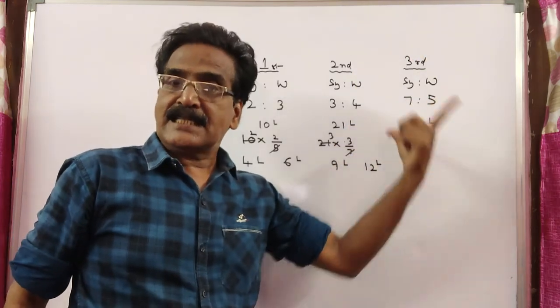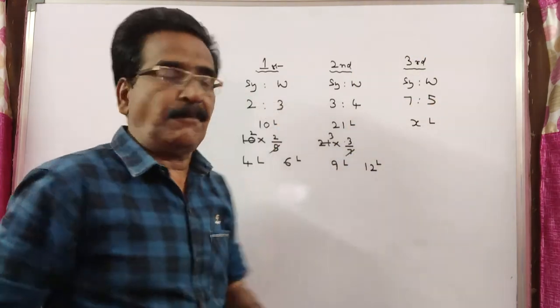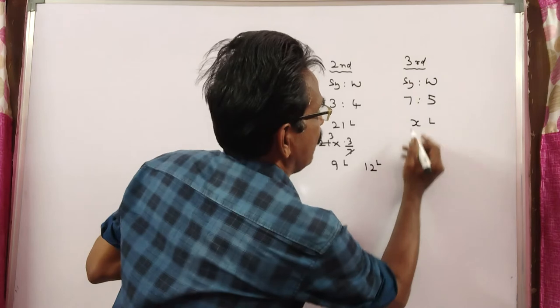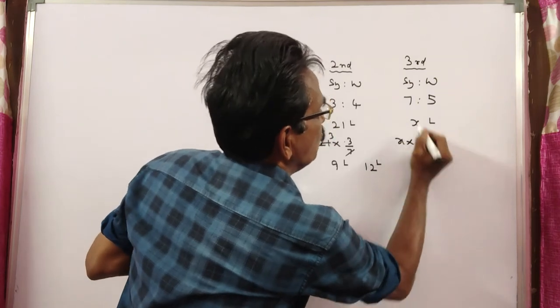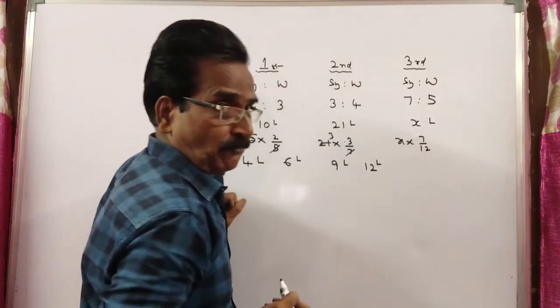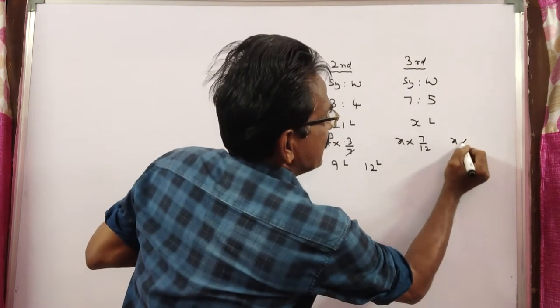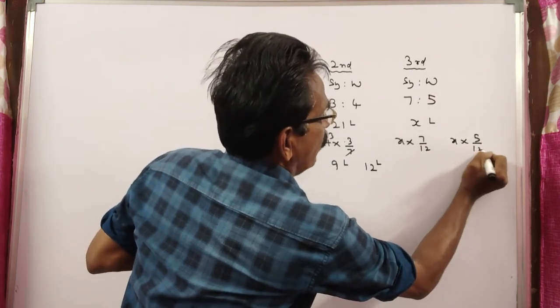Let us say x liters is drawn from the third bottle. So how much syrup is drawn? x into 7 by 12 syrup is drawn. x into 5 by 12 water is drawn.